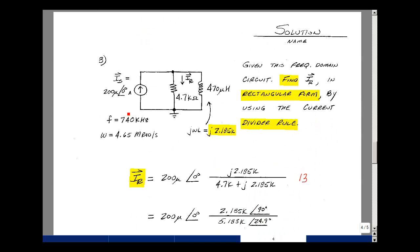In problem number three, we're given a frequency domain input and asked to find the current in a resistor using current divider, and to put that current in rectangular form. We need to find the impedance of the inductance, which is j omega L. We're given the frequency of 740 kHz, so multiplying by 2 pi gives 4.65 mega radians per second. Multiplying that by 470 microhenries gives 2.185 k. We use the impedance current divider: the current in one element equals the other impedance divided by the sum of the two impedances. Putting this into polar form allows quick algebra to find the overall result.